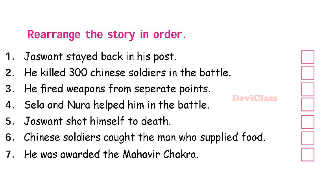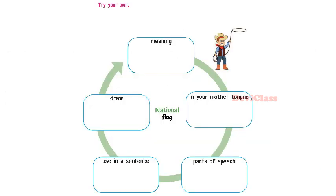Next, rearrange the story in order. First: Jaswant stayed back in his post. Second: Shela and Noora helped him in the battle. Third: he fired weapons from separate points. Fourth: he killed 300 Chinese soldiers in the battle. Fifth: Chinese soldiers caught the man who supplied food. Sixth: Jaswant shot himself to death. Seventh: he was awarded the Maha Vir Chakra.